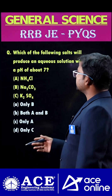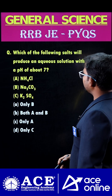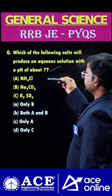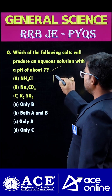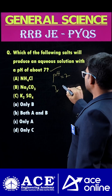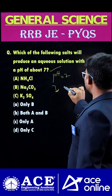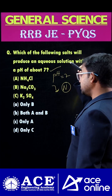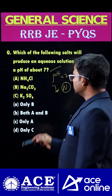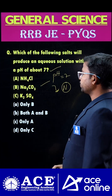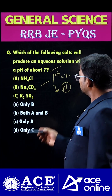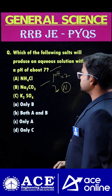Hi students, welcome to ACE Online. Which of the following salts will produce an aqueous solution with a pH of about 7? We already know that if any chemical exhibits pH equal to 7, it should be neutral in nature. Here they mention some salts: ammonium chloride, sodium carbonate, and potassium sulfate. Which one can exhibit pH equal to 7?